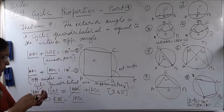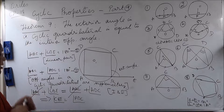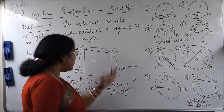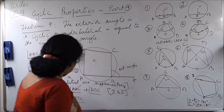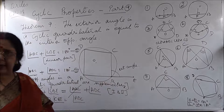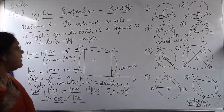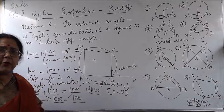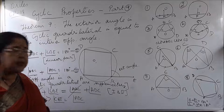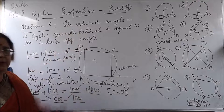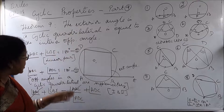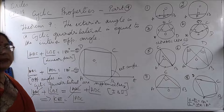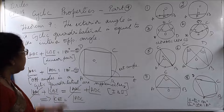So we have verified that the exterior angle in a cyclic quadrilateral is equal to the interior opposite angle. Now, this applies not only when side AB is produced. Even if side BC or side AD is produced, this theorem is true for any exterior angle in a cyclic quadrilateral.